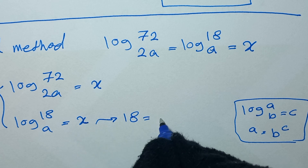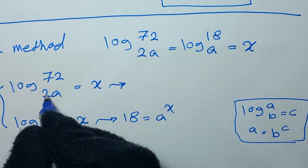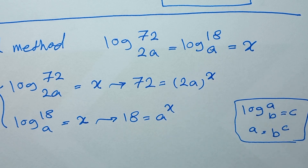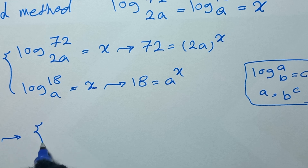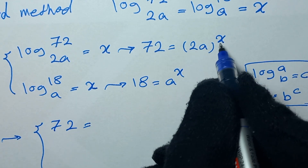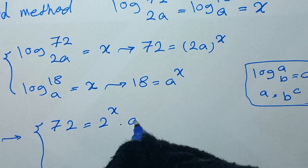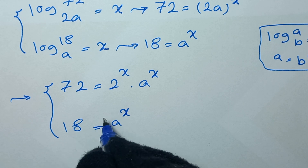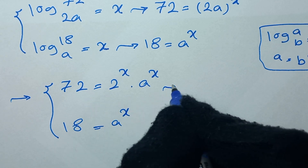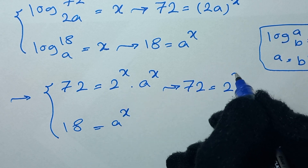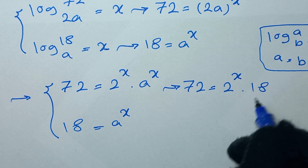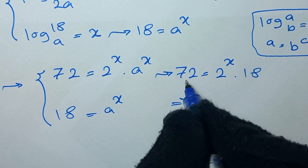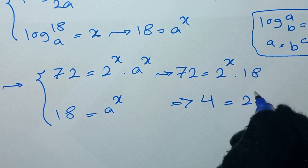So from the second equation, 18 equals a to the power of x. And from the first equation, 72 equals 2a to the power of x. We can expand this as 2 to the power of x times a to the power of x. Since a to the power of x equals 18, we substitute: 72 equals 2 to the power of x times 18. Dividing both sides by 18, we get 4 equals 2 to the power of x.